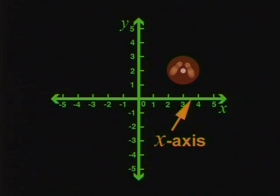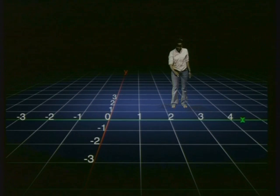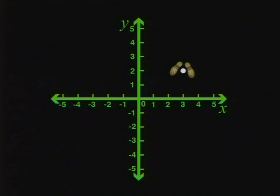We call this number line here the x-axis. Okay, so that's what this line is called. So what's that number line called? That is known as your y-axis, which is this line over here.